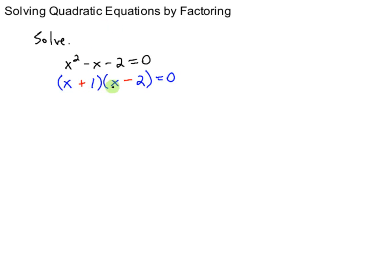This product equals zero so when you multiply two things together and get zero then one of those two things has to be zero. So we can say x plus one equals zero or x minus two equals zero. So that means x is negative one or x is two.